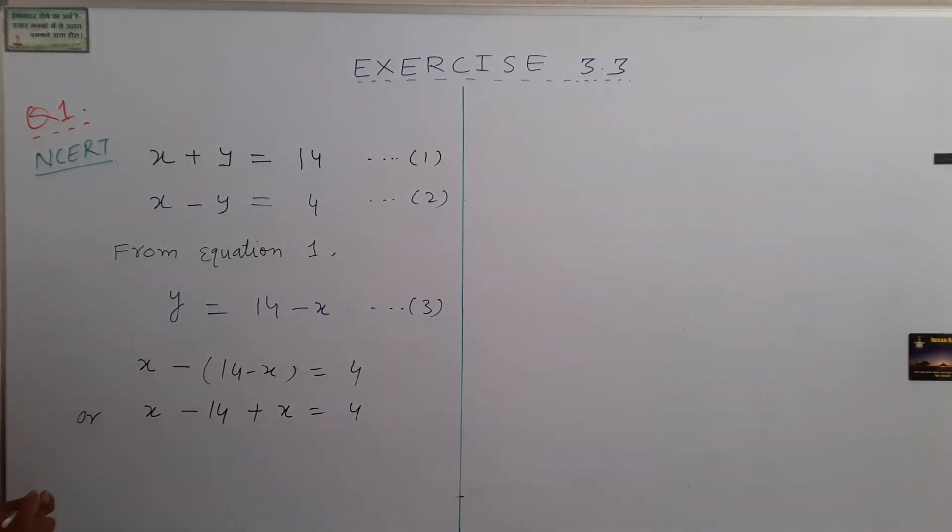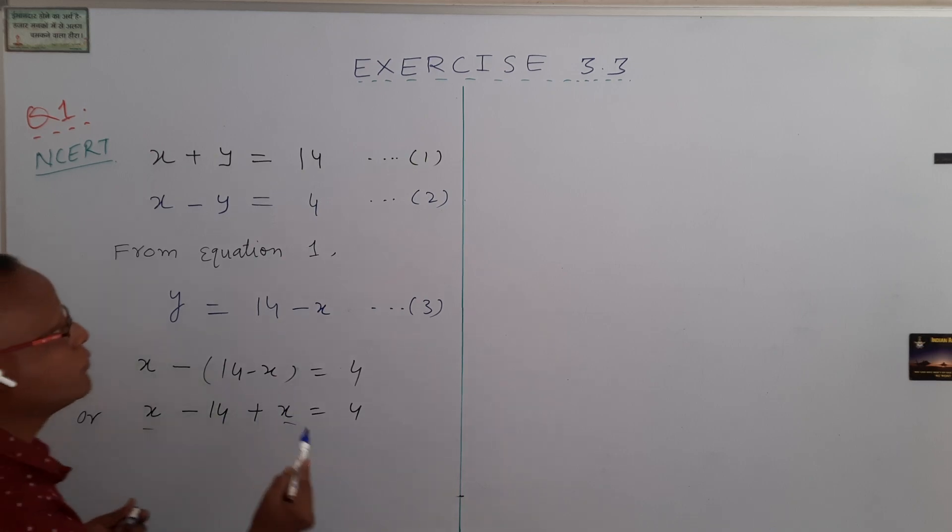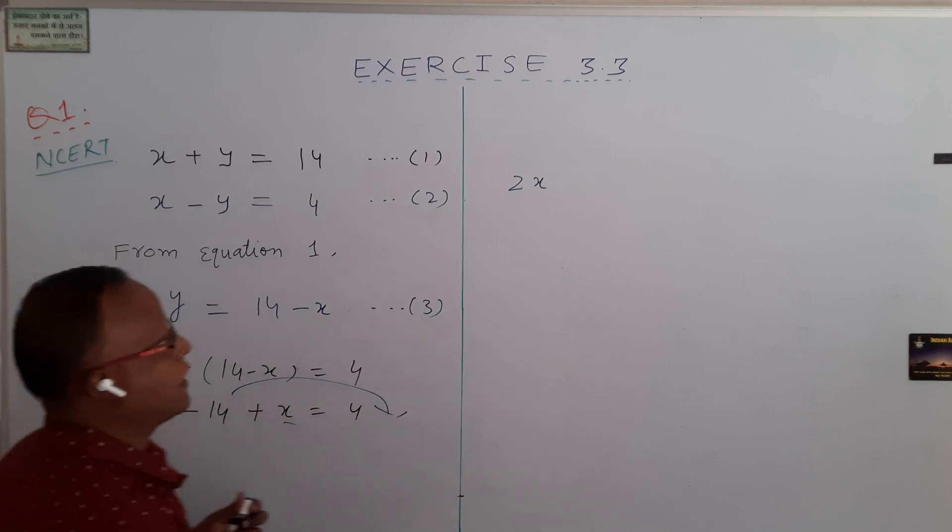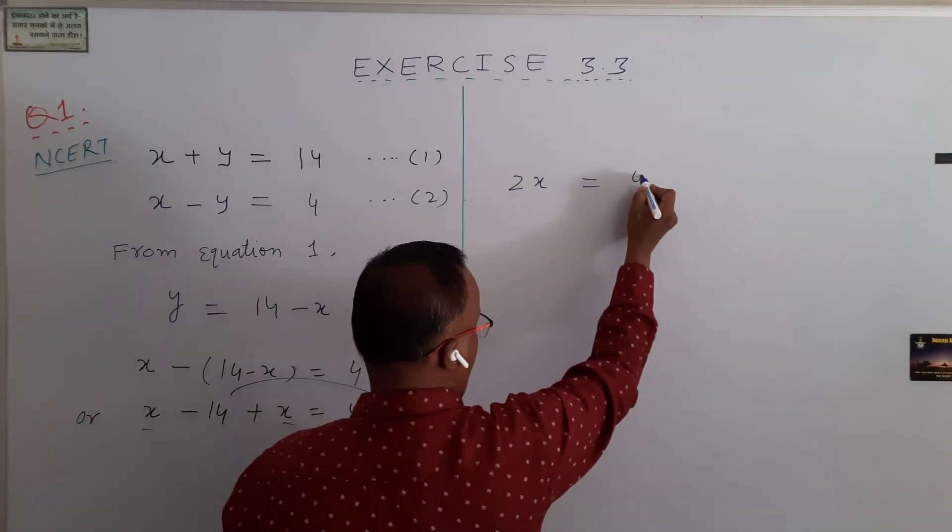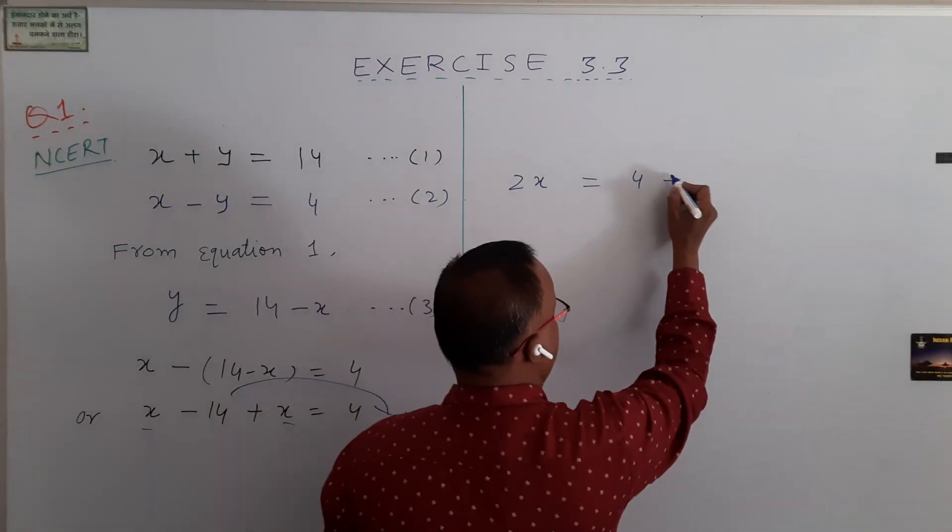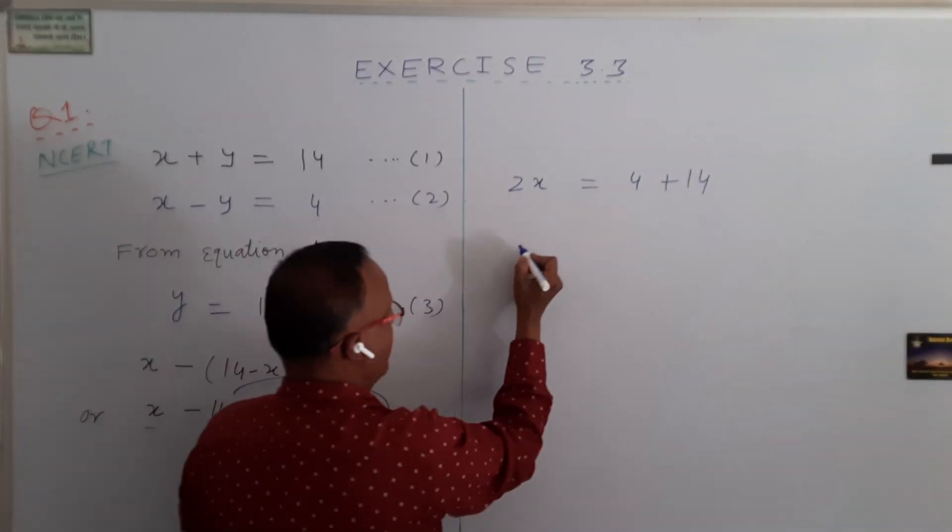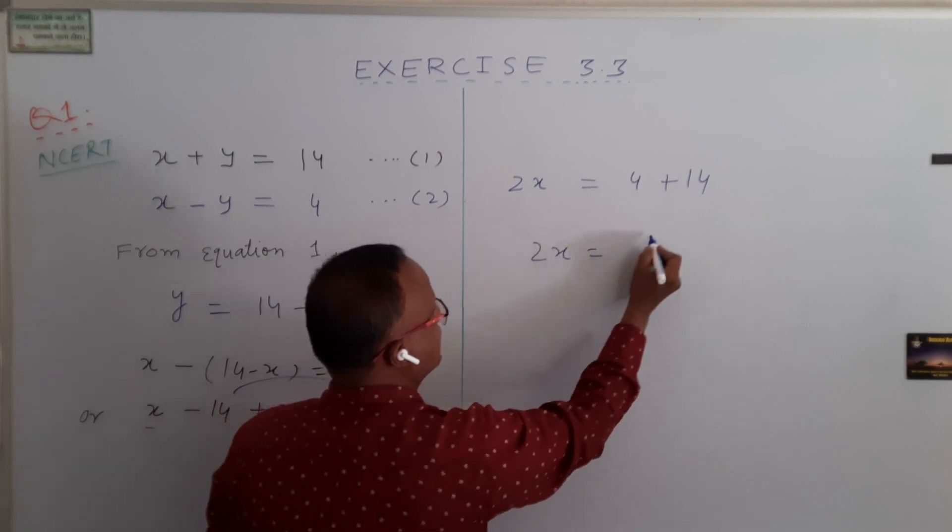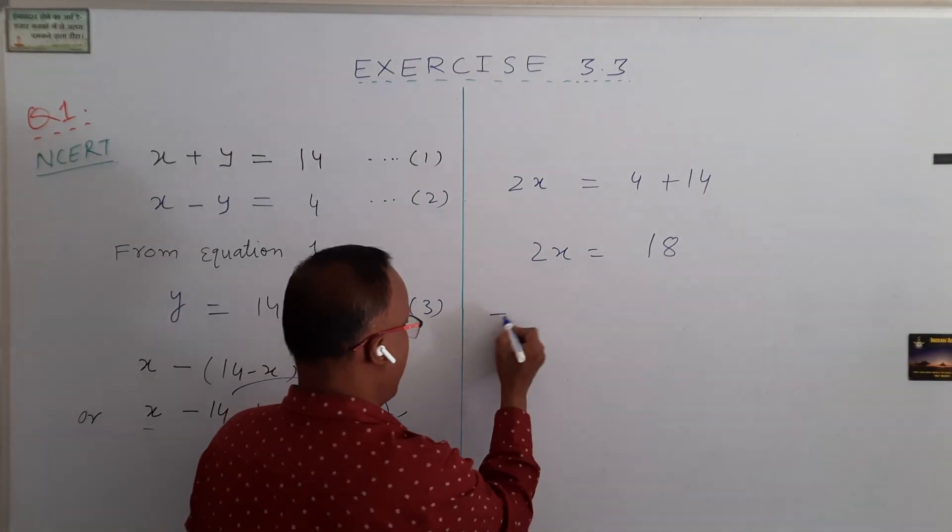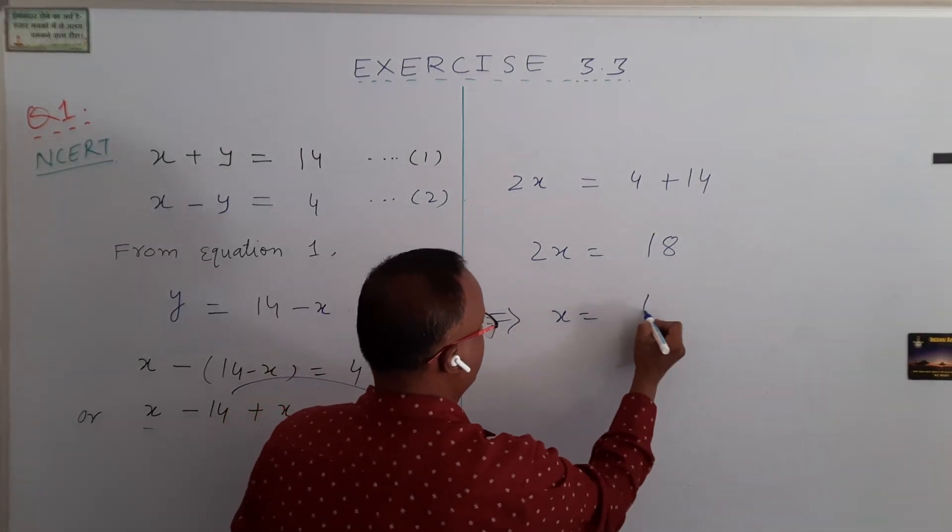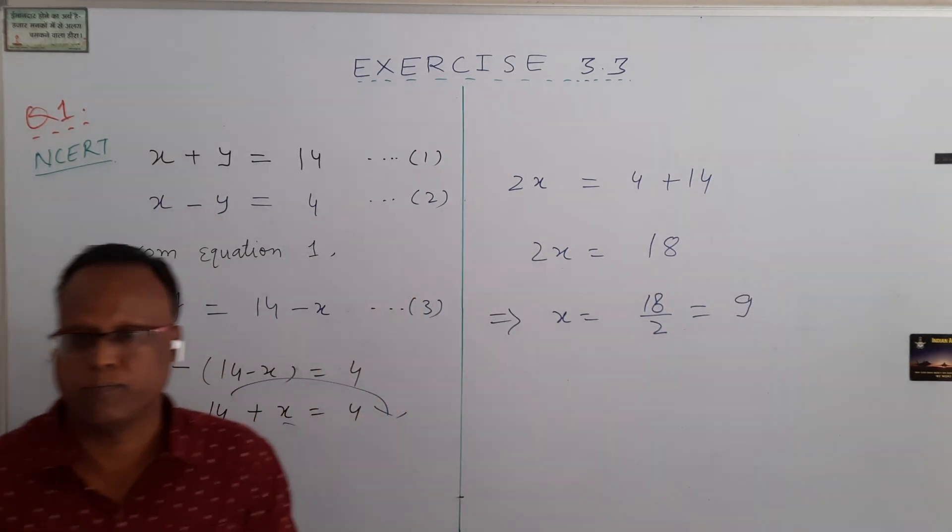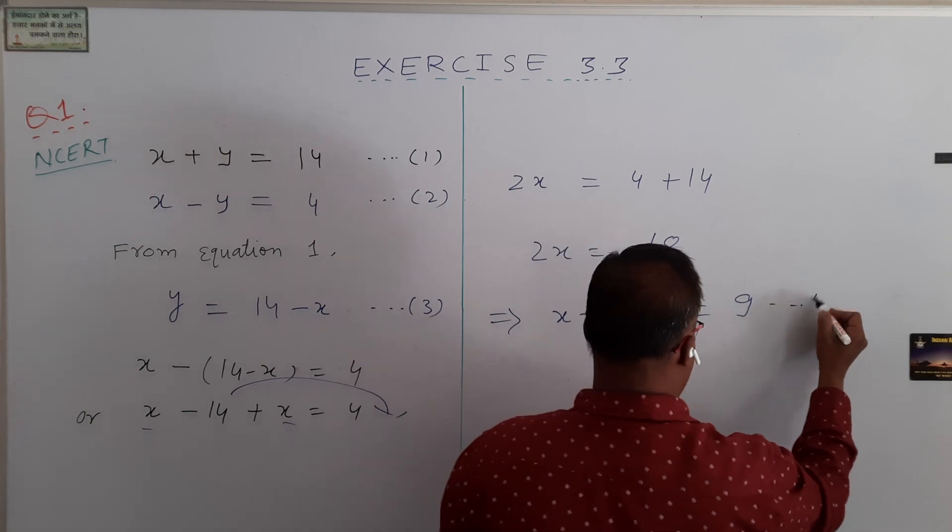Now this x and this x become 2x. And 14 taking right hand side, this is equal to 4, and since this is minus sign, it becomes plus, so plus 14. So finally you get 2x is equal to 18. And what is the value of x then? This implies x equal to 18 by 2. And after solving, you get value of x is 9. This is your equation number 4.